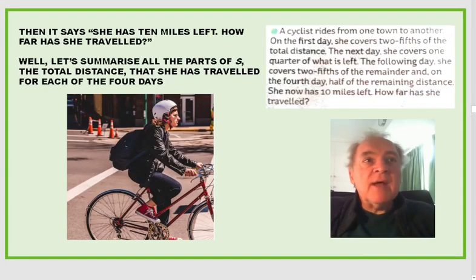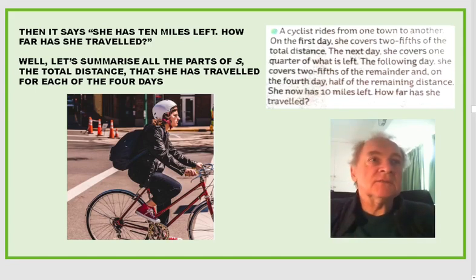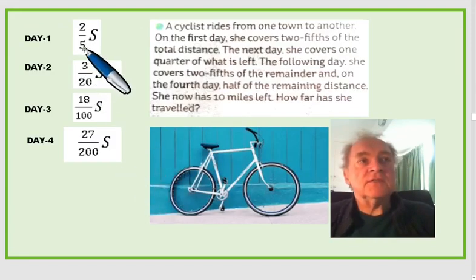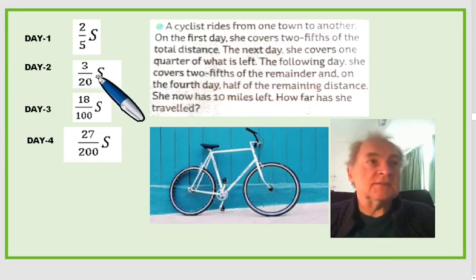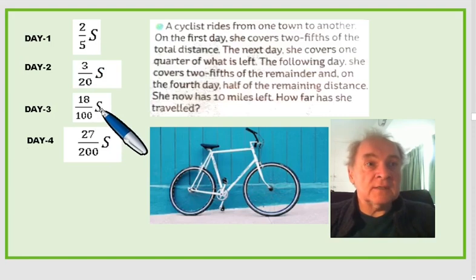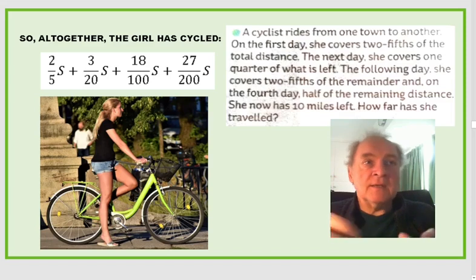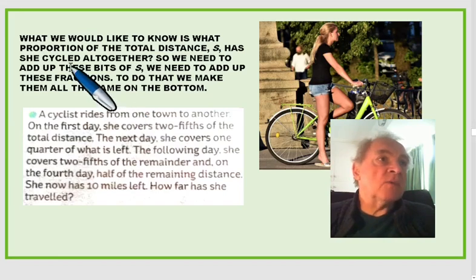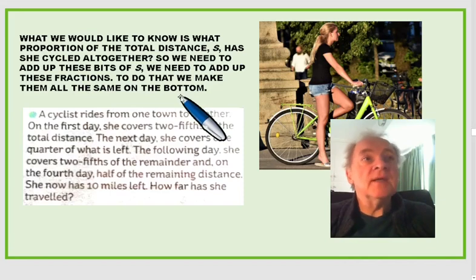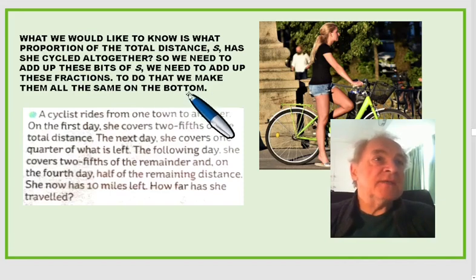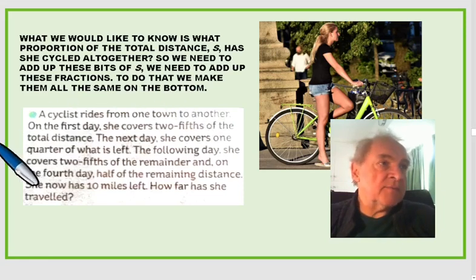Then she has ten miles left. How far has she travelled? Let's summarise all the parts of s, the total distance, that she's travelled for each of the four days. Two-fifths of s on the first day, three-twentieths of s on the second day, eighteen-hundredths of s on the third day, and twenty-seven two-hundredths of s on the fourth day. Altogether, the cyclist has cycled those amounts added up. What we'd like to know is what proportion of total distance s is cycled altogether, so we need to add up these fractions.